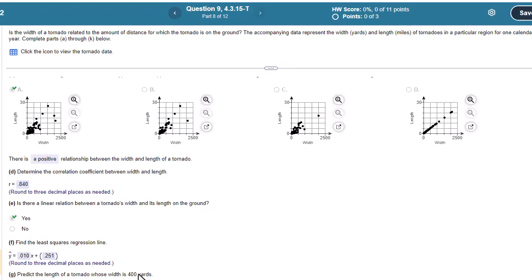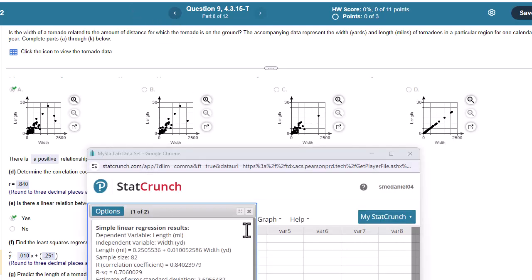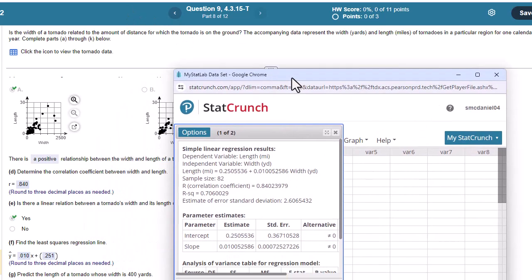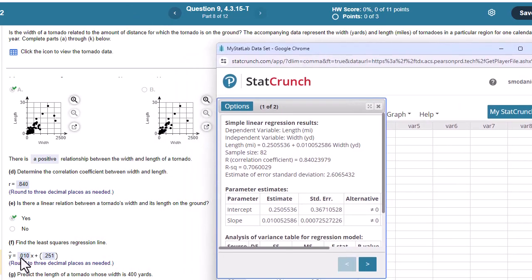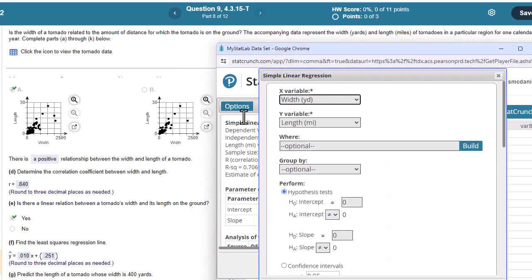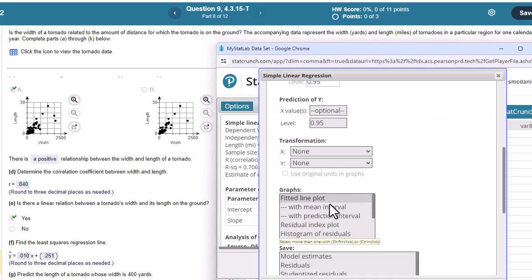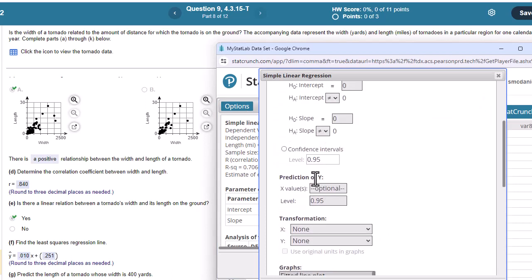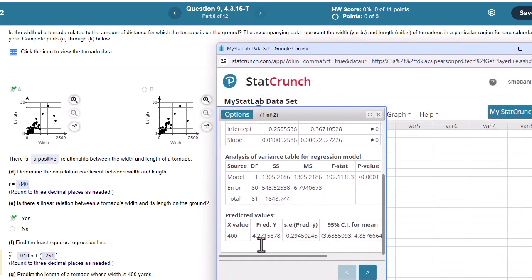Now predict the length of a tornado whose width is 400 yards, and it just says round to one decimal place. So we can do this one of two ways. We can use our calculator and just put this in. 0.01 times 400 plus 0.251. However, let me just show you how to do this on StatCrunch. Edit. And we're going to go over here where it says predictions. So right here, I'm just going to put 400. And then down here, here's our predicted y. And it says round to one decimal place, so 4.3.